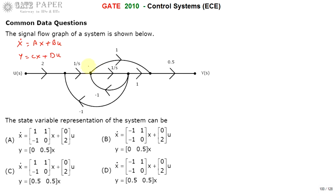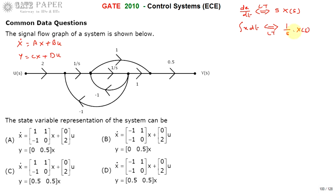Before assigning variables, we need to understand what happens when 1/s is multiplied. If we take dx/dt and apply the Laplace transform with initial conditions equal to zero, we get s·X(s). Similarly, the integral of x with initial conditions zero gives (1/s)·X(s). So multiplying by s in the s-domain corresponds to differentiation, and multiplying by 1/s corresponds to integration.